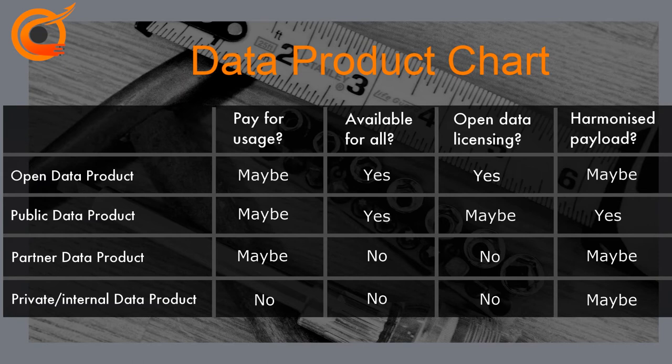Are all data products public? No — all data products must not be public or available to all. Data products, just like APIs, can be divided into four categories: open data products, public, partner, and private/internal data products. This taxonomy is of course a moving target due to the nascent nature of the data economy. Open and public data products are the most visible part of the data economy, while partner and internal data products take a bigger role behind the scenes.